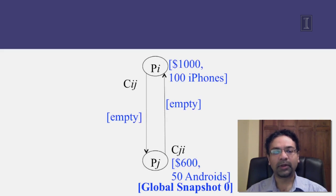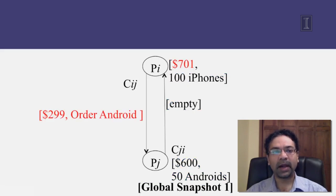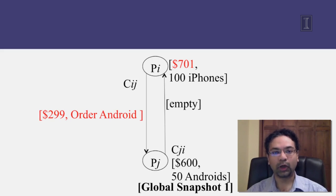Here is global snapshot zero of the system, where PI's state has one thousand dollars and one hundred iPhones, and PJ's state has six hundred dollars and fifty Android phones. The states of channels CIJ and CJI are both empty. These four together comprise global snapshot zero. An event might happen — for instance, PI might send two hundred and ninety-nine dollars and an order for one Android phone over to PJ. This changes the state of PI and also the state of channel CIJ, which now has a message in transit. This new state is global snapshot number one.